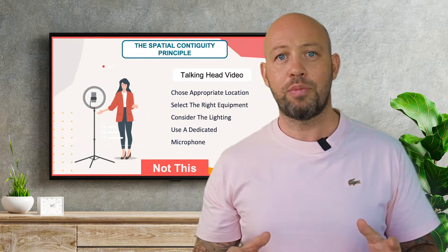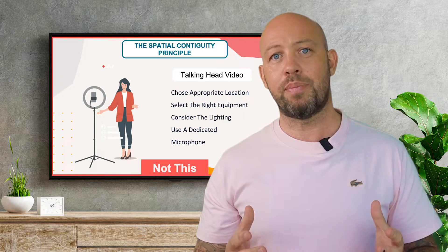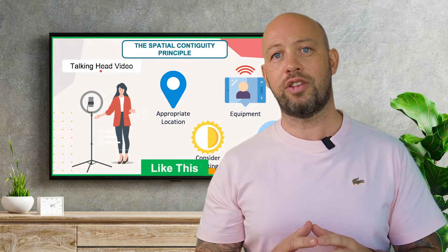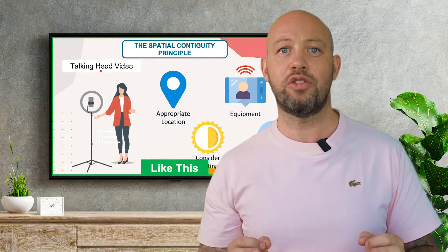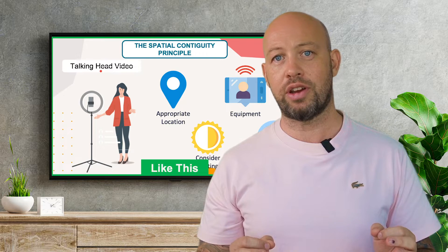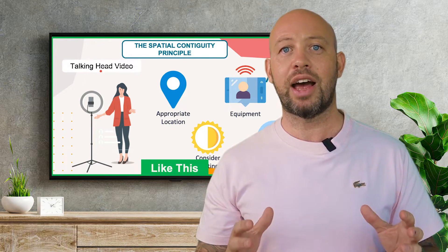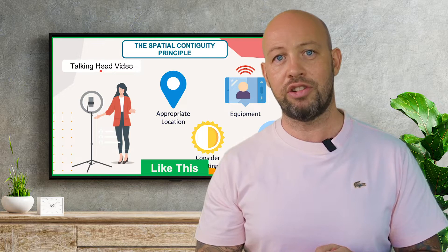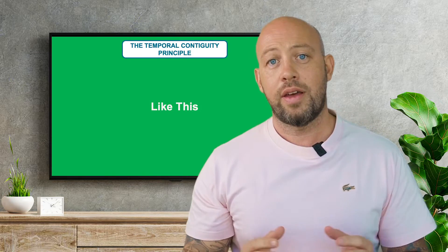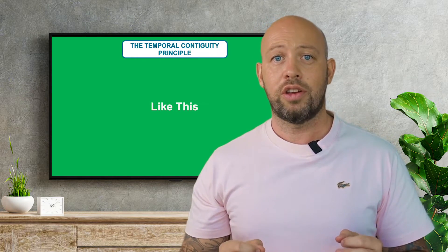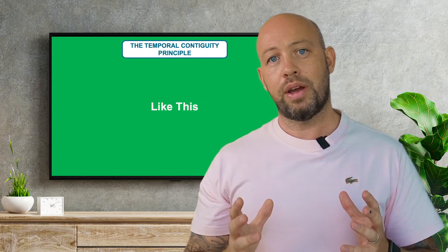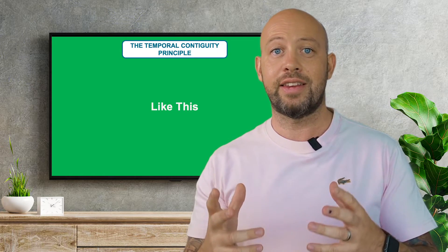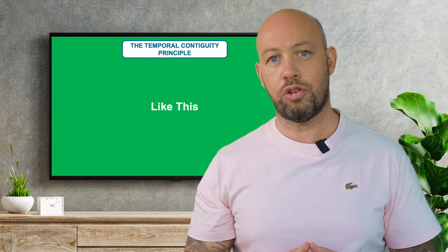The spatial contiguity principle is about the actual space in between your text and visuals on the screen — keep related images and text physically together to show their relationship. The temporal contiguity principle is about keeping audio narrative in sync with the images being shown.